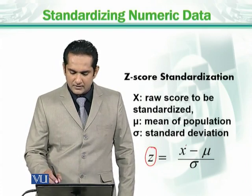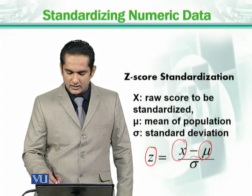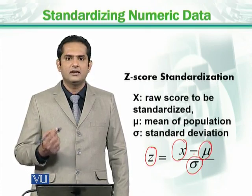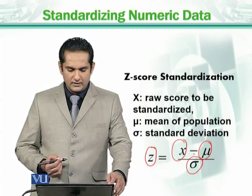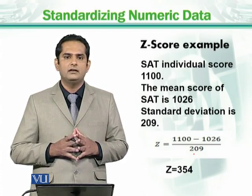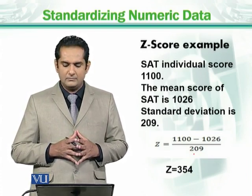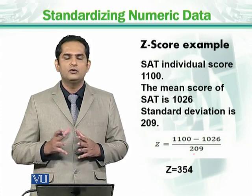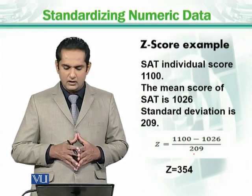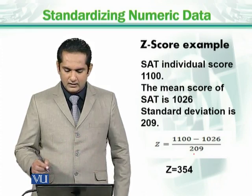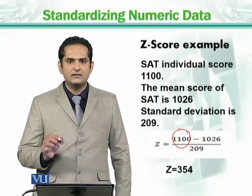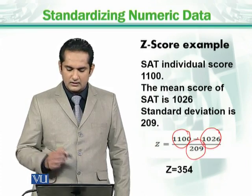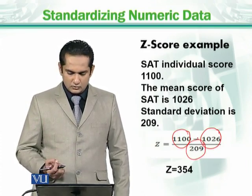The z-score formula is: z = (instance value − mean) / standard deviation. For example, a student received a SAT score of 1100. The average SAT score that year was 1026 and the standard deviation was 209. So the z-score equals (1100 − 1026) / 209, which gives a z-score of approximately 0.354.